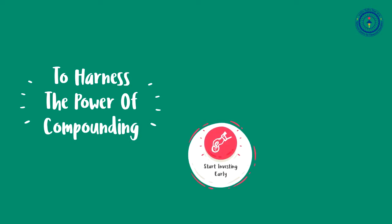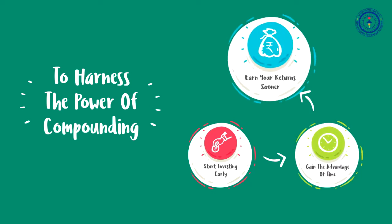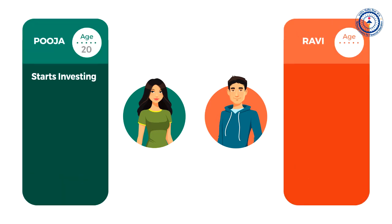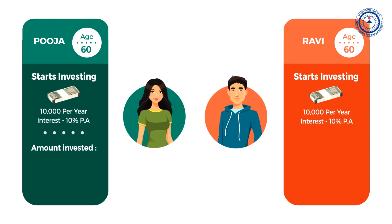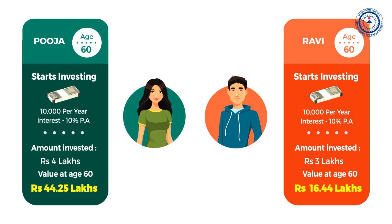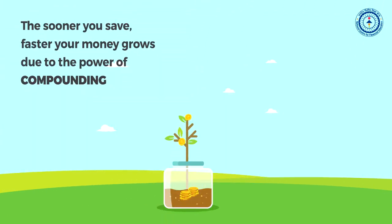To harness the power of compounding, the most important step is to start investing early. An earlier start lets you gain the advantage of time and earn your return sooner. Here is Pooja and Ravi. Pooja starts investing at the age of 20 and Ravi starts investing at the age of 30. They both invest 10,000 rupees per year at 10% per annum. At the age of 60 years, Pooja would have invested 4 lakh rupees in total. The value of their investment at the age of 60 shows that the sooner you save, the faster your money grows due to the power of compounding.